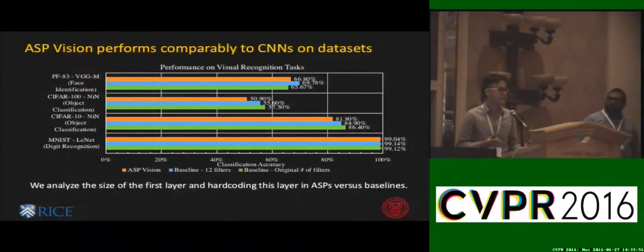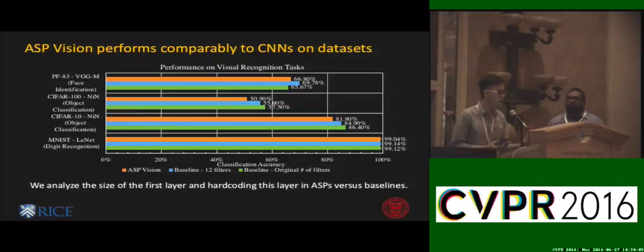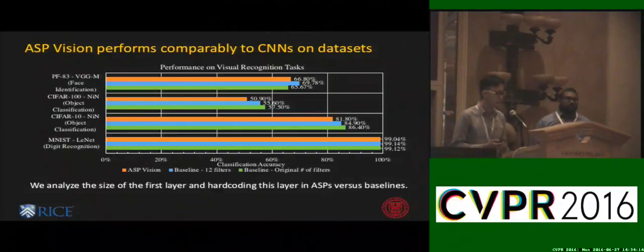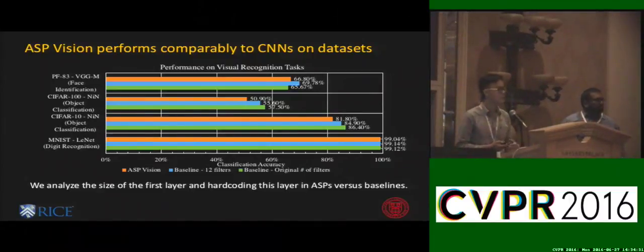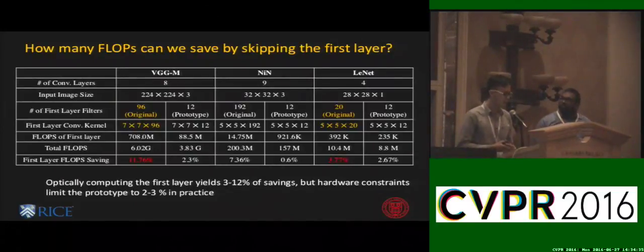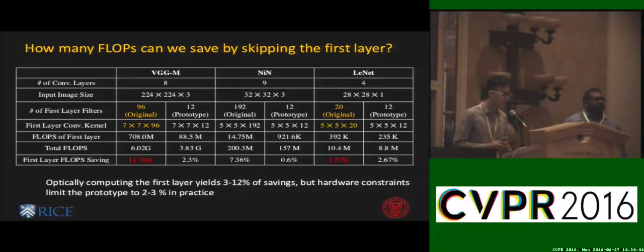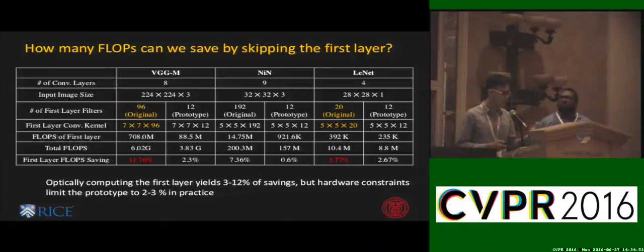We simulated ASP Vision to perform common visual recognition tasks, such as digit recognition on MNIST, object classification on CIFAR-10 and CIFAR-100, and face identification on PF83. We compared ASP Vision results with baseline CNNs such as VGG and LeNet. We analyzed the effect of both the size of the first layer and hard-coding the first layers with ASPs, noting that ASP Vision results in a minimum degradation of 0.1 to 5% across different datasets. We also analyzed the flops saved by optically computing the first layer, with savings varying from 3 to 12% for different networks.